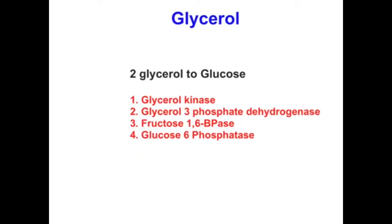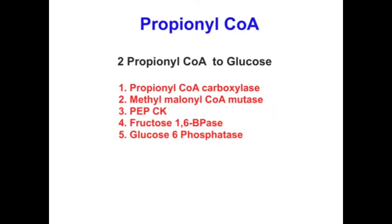The last precursor is propionyl-CoA, which comes from oxidation of odd-number carbon fatty acids in the mitochondria. Propionyl-CoA is a three-carbon molecule, so you need two propionyl-CoA to make one glucose. First, propionyl-CoA is converted to methylmalonyl-CoA by propionyl-CoA carboxylase, which requires biotin. Then methylmalonyl-CoA is converted to succinyl-CoA by methylmalonyl-CoA mutase, which requires deoxyadenosylcobalamin. This then feeds into oxaloacetate.